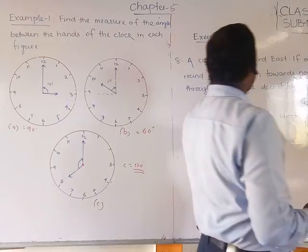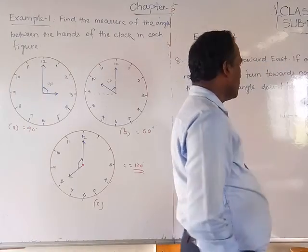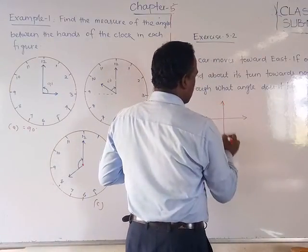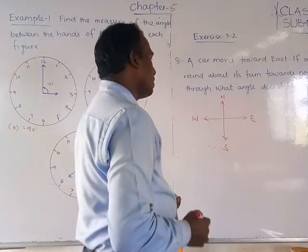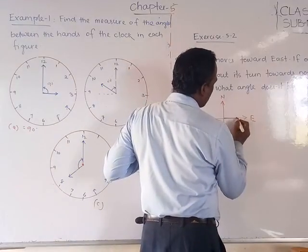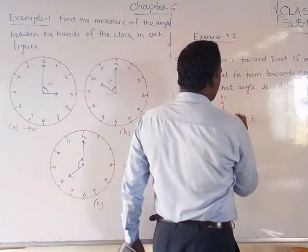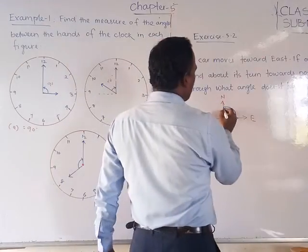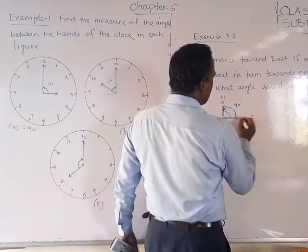Now, in your exercise 5.2, question one is given. You can understand, the car moves towards east. You should see, you can observe the direction diagram like this. This is north, down is south, this is east, and this is west. If one car is traveling, suppose you are here, if the car is traveling here towards the east, and it turns round towards the north, it will turn up to here, north.